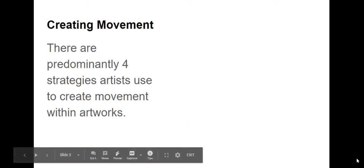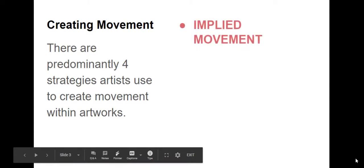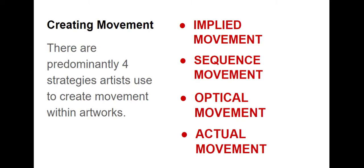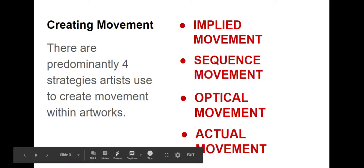When creating movement, there are four basic strategies that artists use. We break down types of movement within artworks into implied movement, sequential movement, optical movement, and actual movement. The first three have to do with static artworks, while actual movement has to do with a physically moving object.